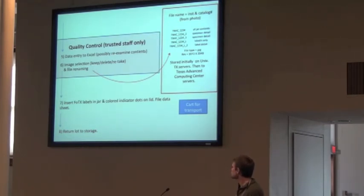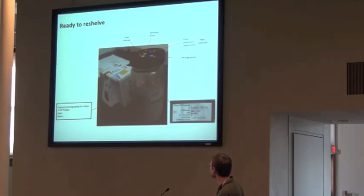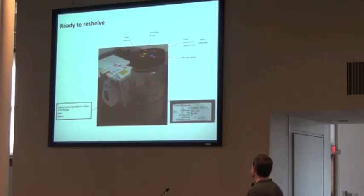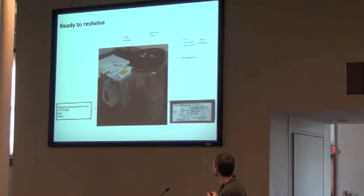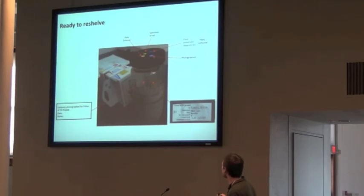So we insert efficient text labels in the jar, put colored integer dots in the lid, and we file away our data key, and it returns the specimens to the collection. Here's a jar back in the collection — it has a label saying that the contents have been photographed by the Fishes of Texas project, and then by who and the date, and then we have the Fishes of Texas project label which says the determination, who determined it, and the institution catalog number. All or almost all jars in the collection have a blue dot, which means it has an ID, and then for the Fishes of Texas project we have other dots: data entered, specimen with an ID, and specimen with a photograph.